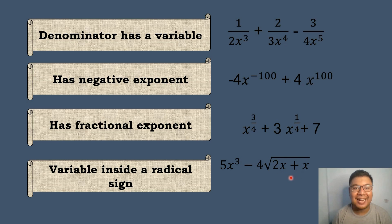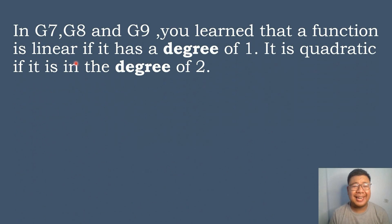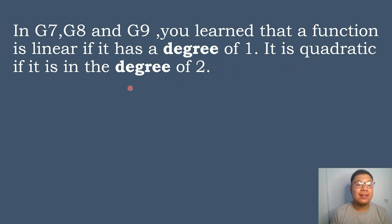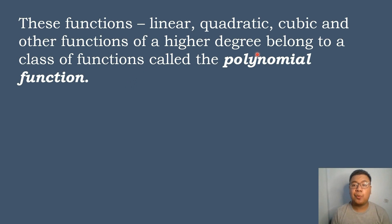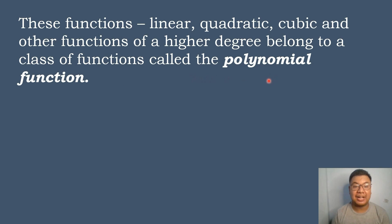In grade 7, grade 8, and grade 9, you have learned that a function is linear if it has a degree of 1, and it is quadratic if it has a degree of 2. You also learned that the degree is the highest or largest exponent of a variable in the function. These functions — linear, quadratic, cubic, and other functions of a higher degree — belong to a class of functions called the polynomial function.